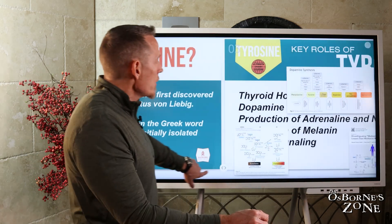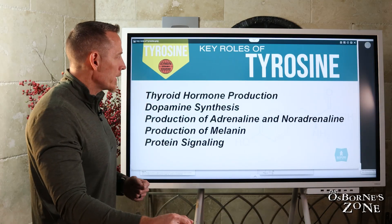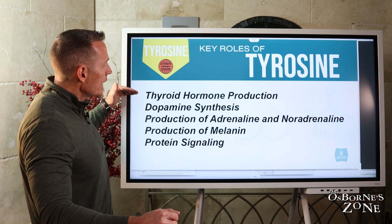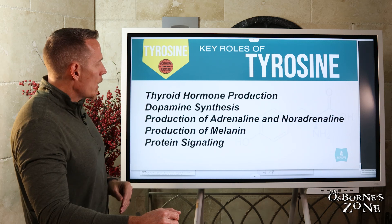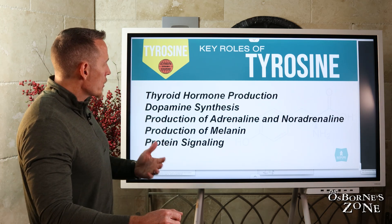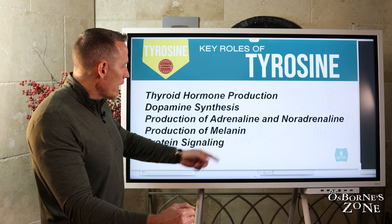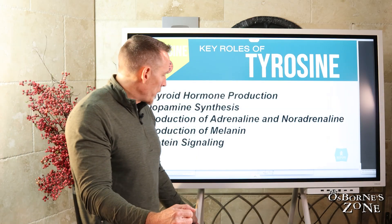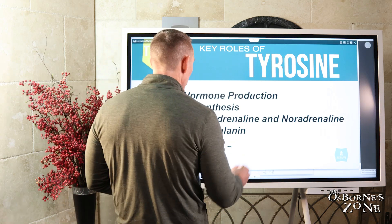From isolation to functionality, what are the main key roles that tyrosine plays in the body? Number one, it's necessary to make thyroid hormones. Number two, it's necessary to produce dopamine, the pleasure neurotransmitter. You need it to make adrenaline and noradrenaline — your stress hormones, sometimes referred to as epinephrine and norepinephrine. You also need tyrosine to make melatonin, and it's very key for a group of signaling molecules called tyrosine kinases.